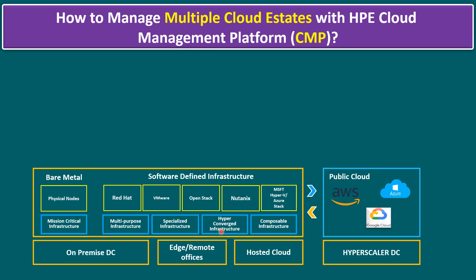For example, HCI means hyper-converged infrastructure — HPE has HPE SimpliVity, and if you plan to use VMware HCI you can use vSAN, or you can use Nutanix HCI. Composable infrastructure means HPE Synergy — a blade server platform where you can compose compute nodes as well as storage nodes within one HPE Synergy frame.